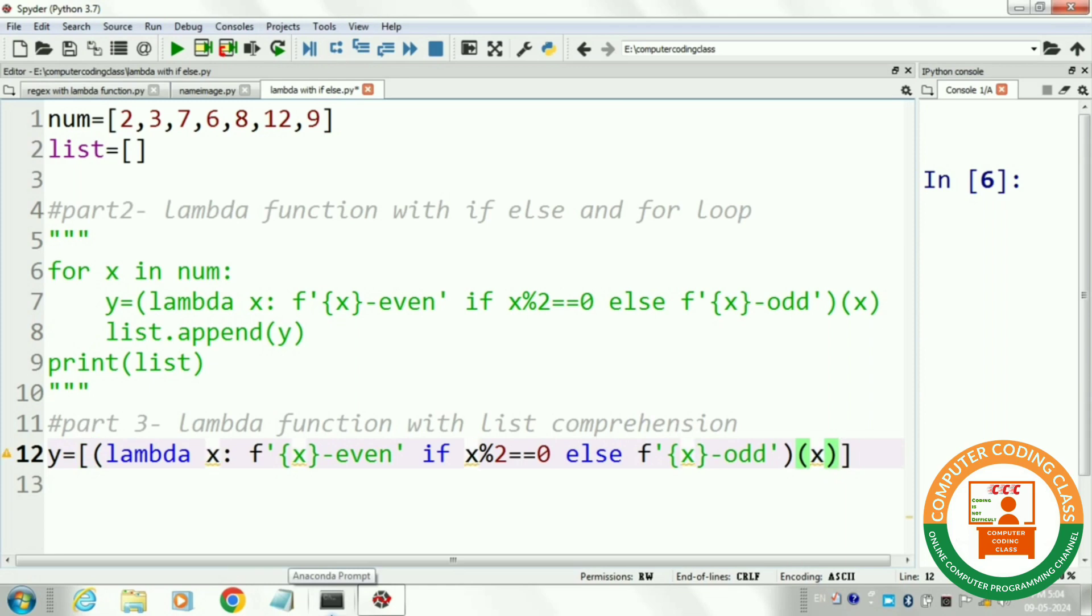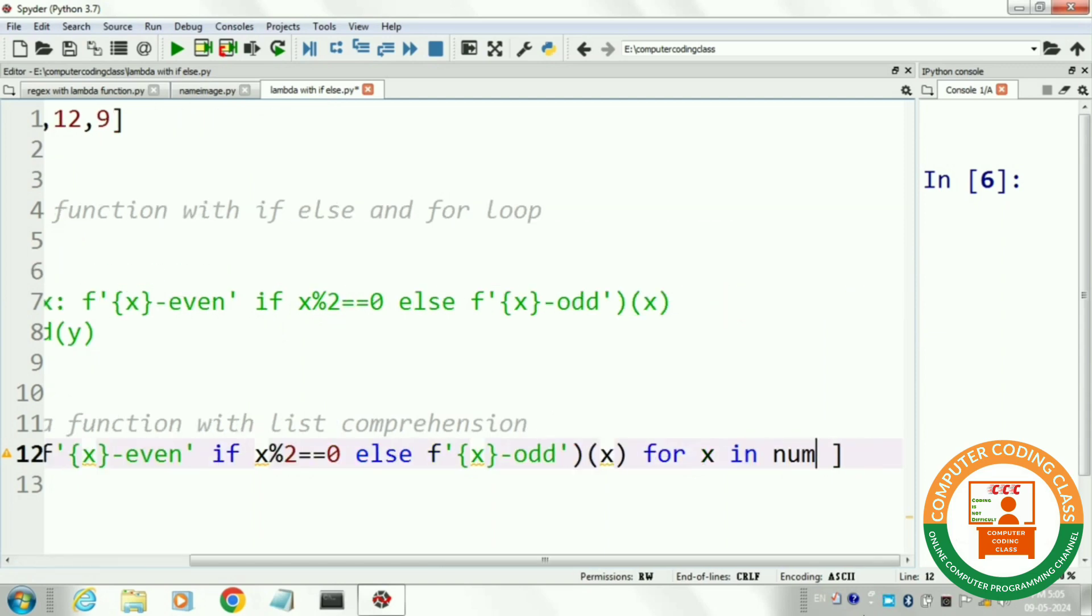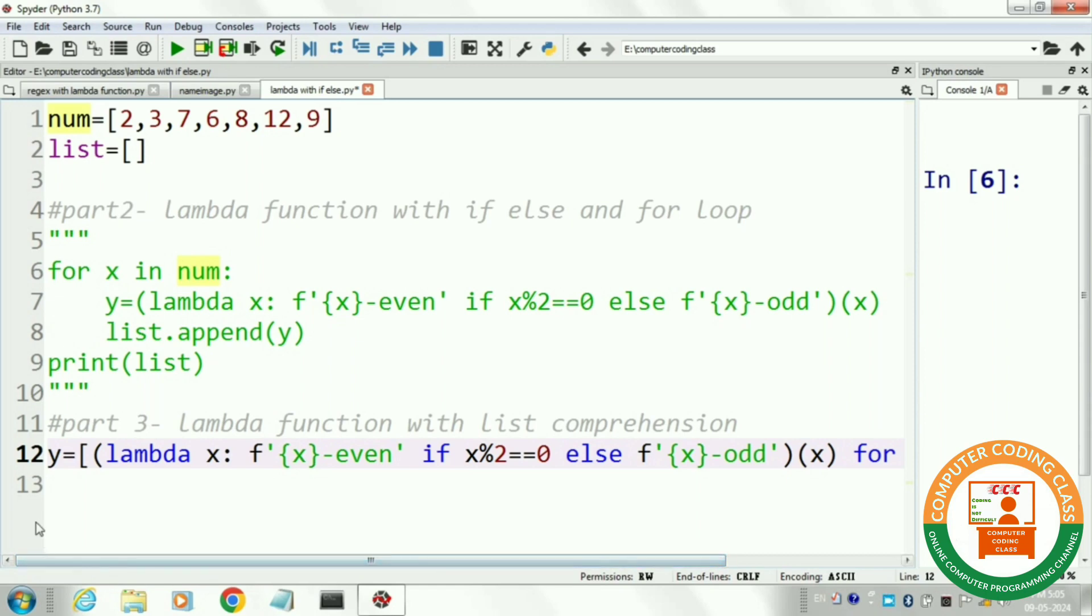After the lambda function, we will write our for loop that is for x in num and we have created our list comprehension. This statement returned a list of numbers that are stored in variable y. It means y is now a python list that contains both the even and odd numbers with label.